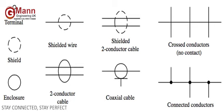Wiring installation codes and regulations are intended to protect people and property from electrical shock and fire hazards. They are usually based on a model code with or without local amendments produced by a national or international standards organization, such as the IEC.